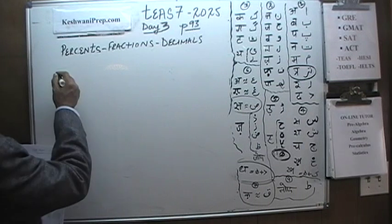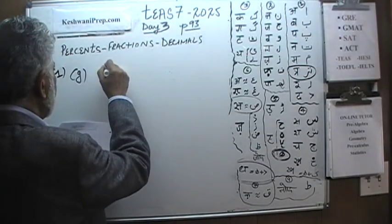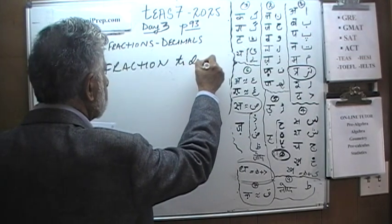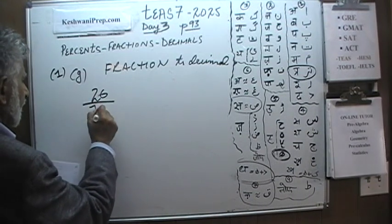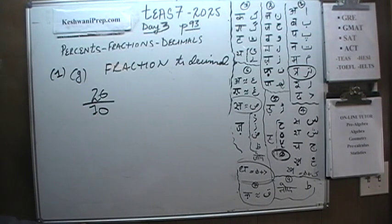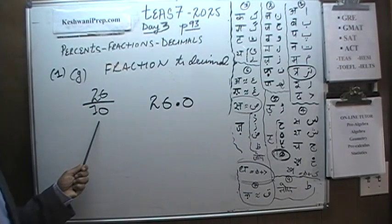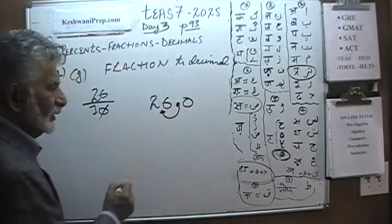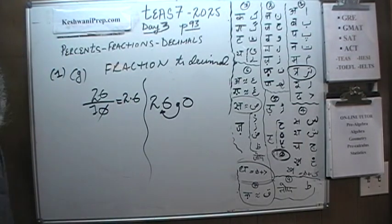We are still at problem number 1, part G. We are being asked to convert a fraction to a decimal. The fraction given to us is 26 over 10. Well, there is really not much to do here. 26 divided by 10 — since we are dividing by 10, which has only one zero, we pick up the decimal and move it one place. And 26 divided by 10 becomes 2.6. That's all.